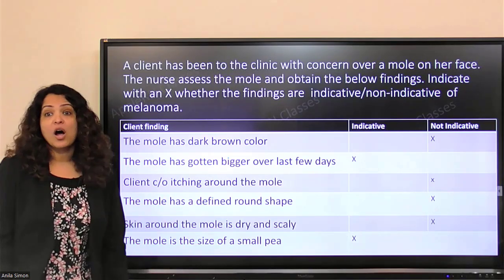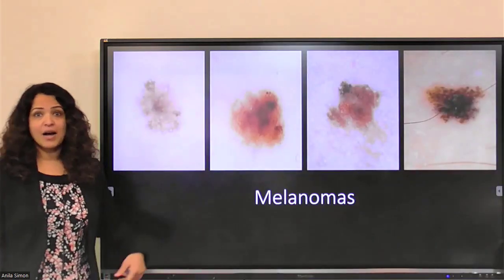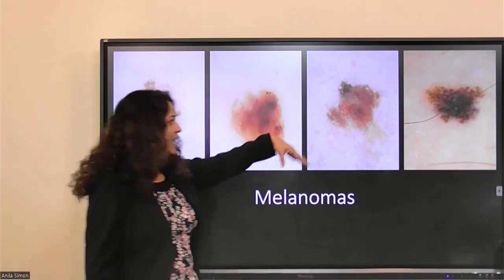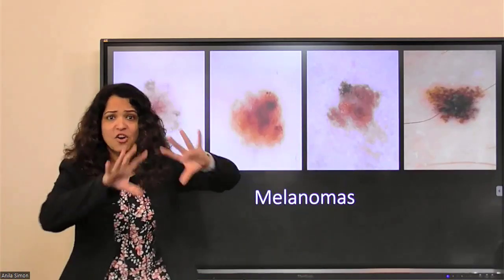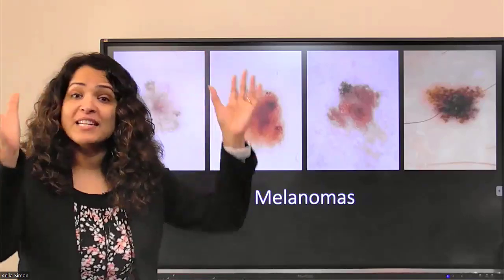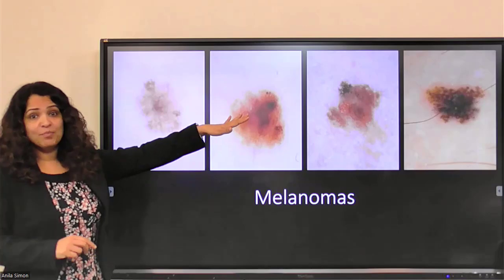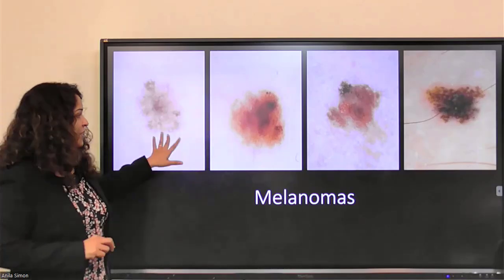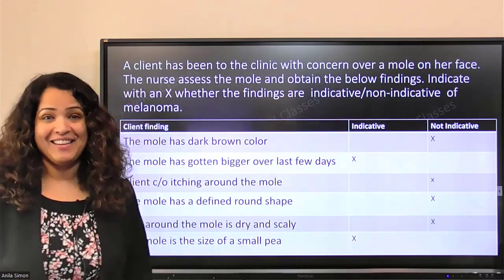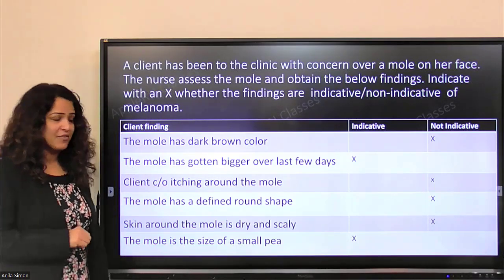The mole has a defined round shape. If you recall the melanoma images, none of them has a defined round shape — they all have irregular, notchy edges; they're not symmetrical. A is asymmetry, B is border, and if the border is nice and round, it's probably not melanoma. So here, with a defined round shape, it's definitely not indicative.